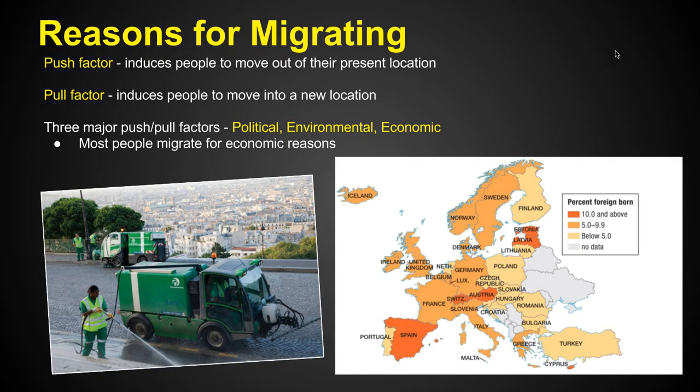Reasons for migrating — we've got two. Either a push factor, which induces people to move out of their present location, meaning they're pushed out of their country, or a pull factor, which induces people to move into a new location — it pulls them into a new country. Most commonly, we think of people being pushed out of Europe because they didn't have jobs, and pulled to the United States because they found jobs there.